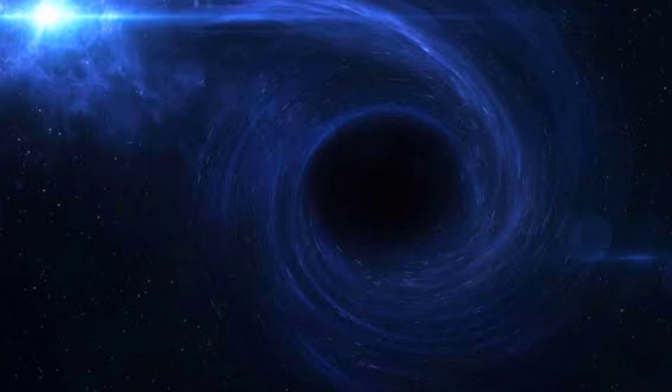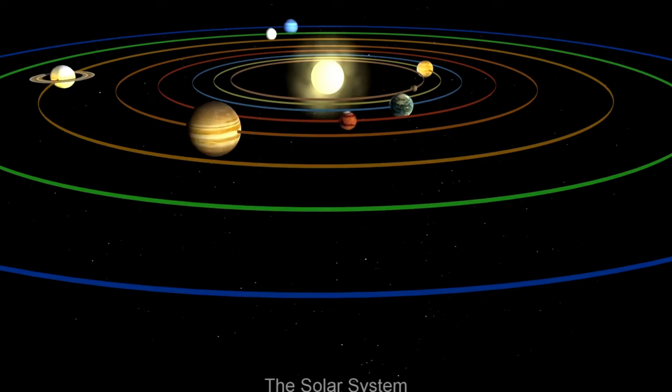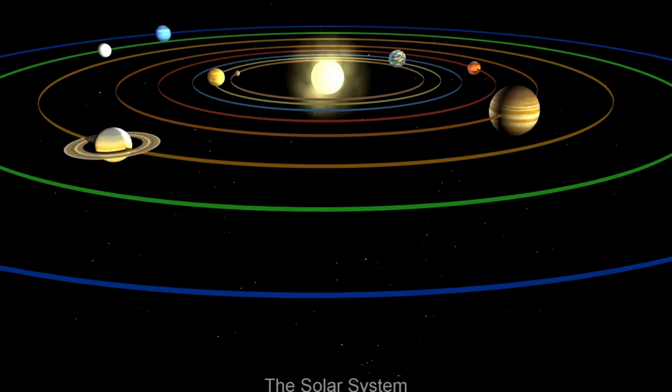Without dark matter, spiral galaxies would rotate like our solar system does, with inner objects rotating more quickly than outer objects. So, what happens when a star dies?